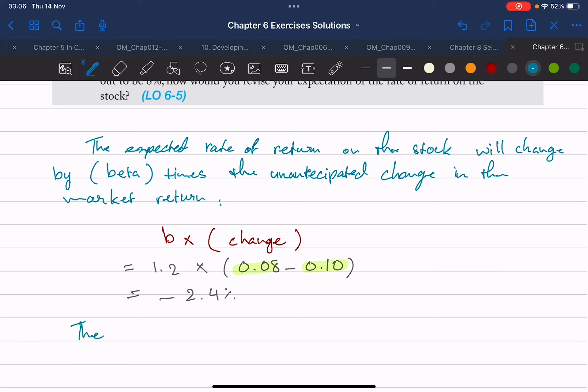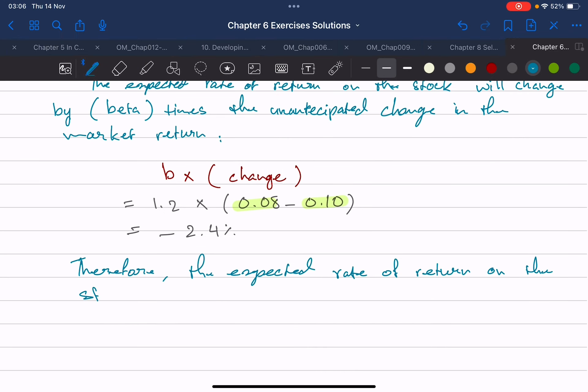the expected rate of return on the stock should be revised to 12% minus 2.4%, which equals 9.60%.